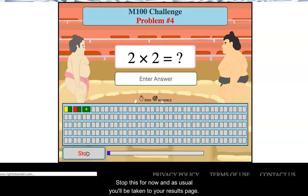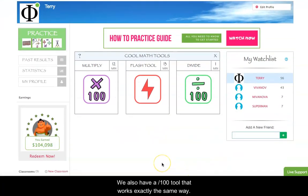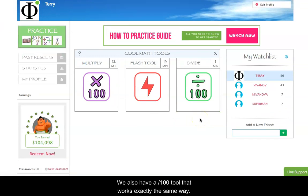And as usual, you'll be taken to your results page. Okay, and we also have a divide by 100 tool that works exactly the same way. In this case, you're recalling the facts in the reverse order as a division question instead of a multiplication question. So there you have a method for rapidly memorizing your 9x9 multiplication facts, which again, the recall of these facts will be used in the higher level abacus training and mental calculation training where they'll need to recall these facts as quickly as possible.